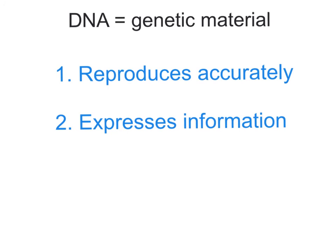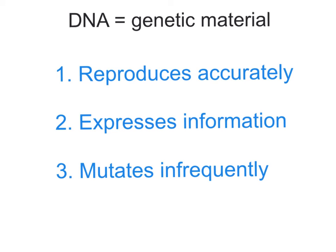The second condition is that all genetic material expresses information, and that's what we're going to start looking at. DNA expresses information by making proteins, so we're going to start looking at protein synthesis. The third thing is that DNA mutates infrequently. That's very important because mutations will change characteristics of organisms and might change the information that's expressed. The accurate reproduction of DNA basically ends up with infrequent mutations.